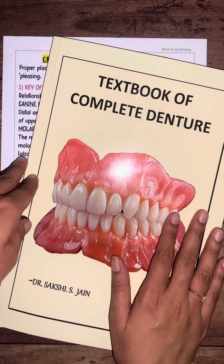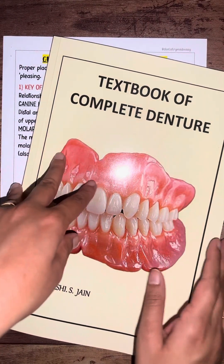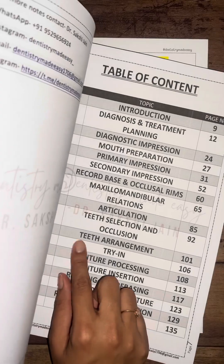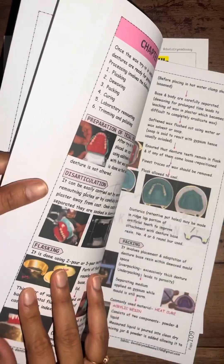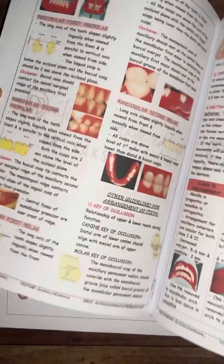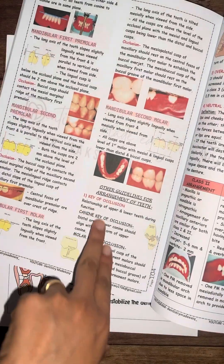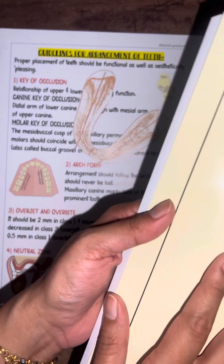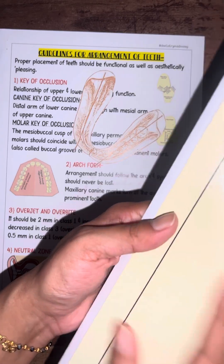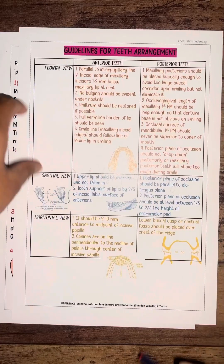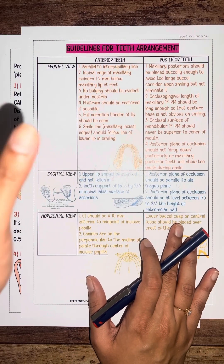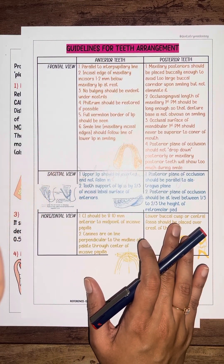This topic is covered in the textbook of complete denture by Dentistry Made Easy. The same content and table is given in Winkler second edition. If you are interested in buying this book, you can DM us. That was all about today's video — I hope you found this helpful.